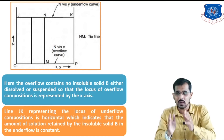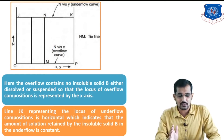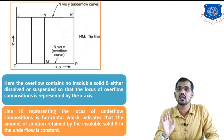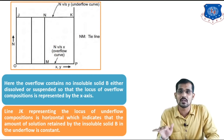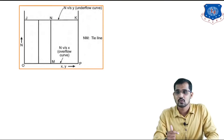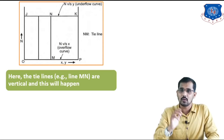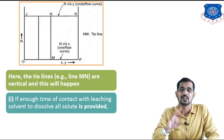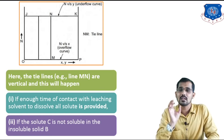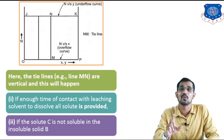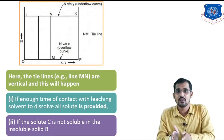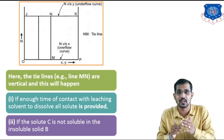To repeat: the two vertical lines represent tie lines, meaning we are providing sufficient time for the leaching process between solid and liquid. The JK line is a straight line, meaning there is constant underflow. If that line were varying, then the varying underflow would be present. The tie lines are vertical because we are providing sufficient contact time for the leaching process, and the insoluble solid is not soluble in the extracting solvent.